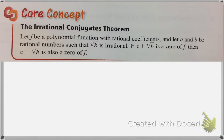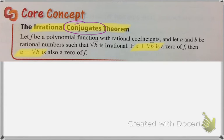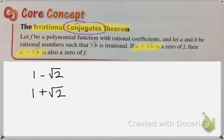One more concept I want to talk about today is called the irrational conjugates theorem. This theorem is essentially saying that if you have zeros that have a constant and a radical, or even just a radical, they are always going to come in pairs — what's called a conjugate. For example, if you have an answer that is 1 minus the square root of 2, you are always going to have another answer that is 1 plus the square root of 2. This comes from when you are solving and you take the square root — we always have the plus or minus square root. So if you have an answer like positive root 5, you are also going to have an answer of negative root 5. This is called the irrational conjugates theorem.